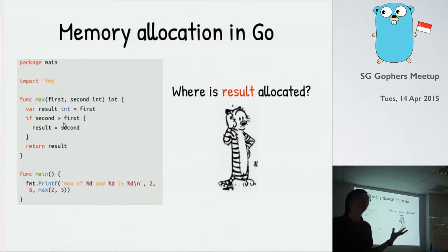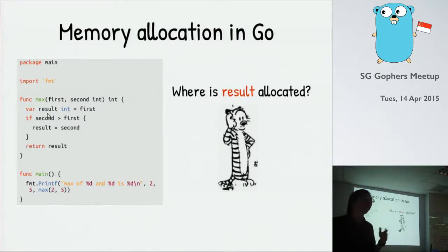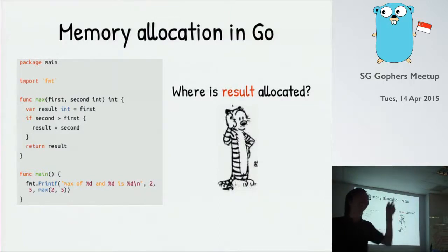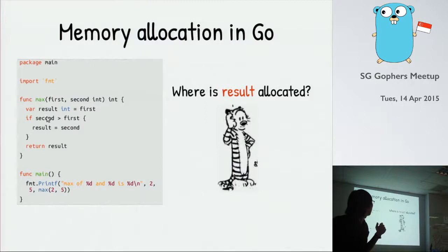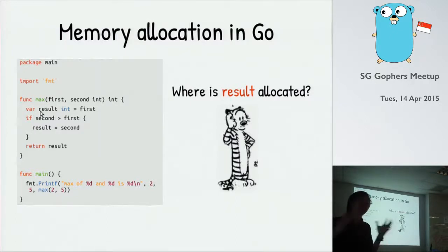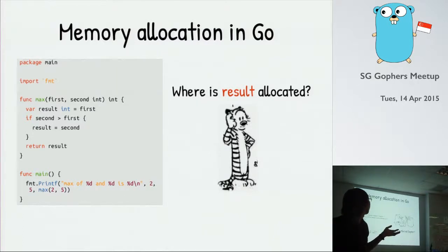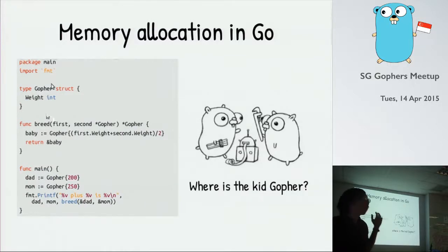Now in Go, the code for the max function looks the same. I have a result here and assign the value to it. Can any of you guess — will this be on the stack or the heap? Actually in Go there's no strict concept of stack or heap, but the compiler knows which variable goes where. I'll elaborate on that in a bit.